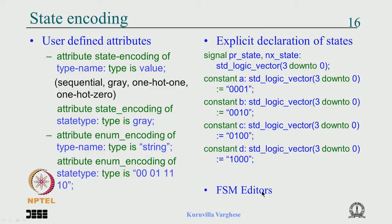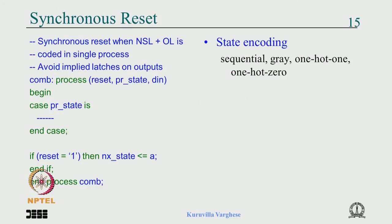There are also graphical FSM editors that allow you to draw the state diagram and generate equivalent VHDL or Verilog code. There is no magic — each bubble is a state and each arrow is a transition, which are tracked in a data structure, and template code is generated. This was reviewed from the last lecture so it is fresh in mind.